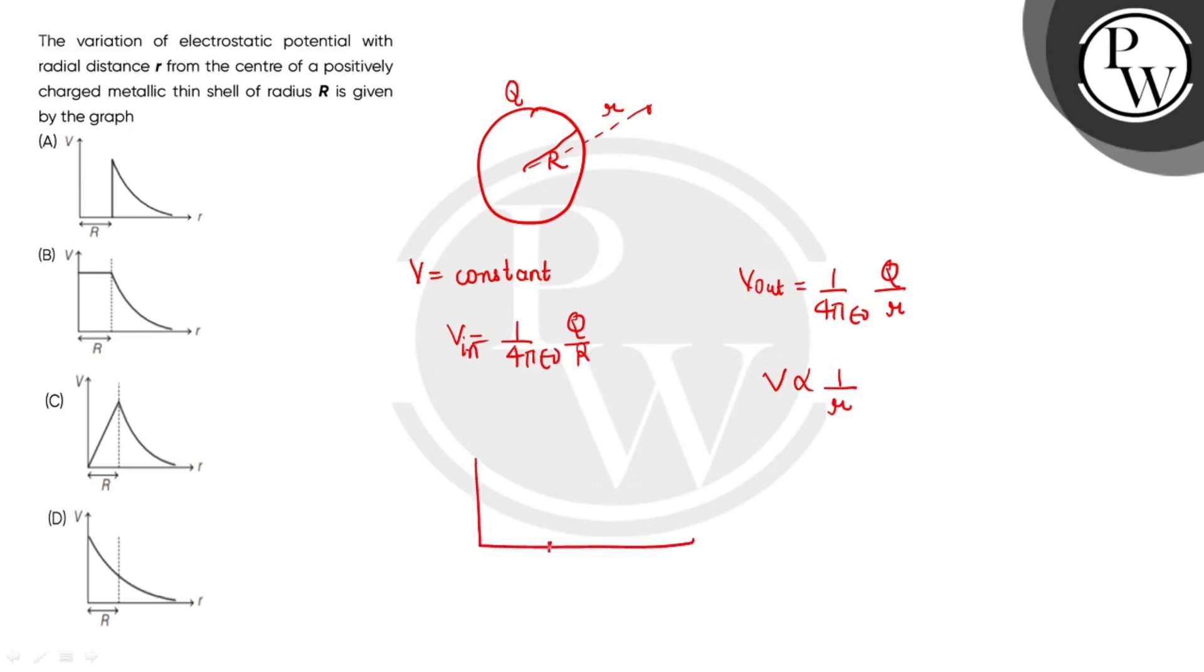If I talk about inside, this will be constant, and then inversely proportional to small r. This will decrease. This will be our graph, potential versus distance. We can see which is given option B. Outside is constant and decreases. Option B would be the correct answer.